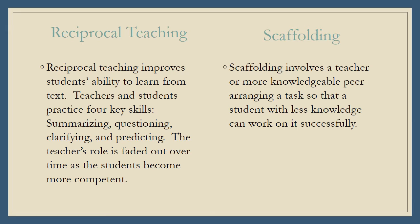Reciprocal teaching improves students' ability to learn from text. Teachers and students practice four key skills: summarizing, questioning, clarifying, and predicting. The teacher's role is faded out over time as the students become more competent.